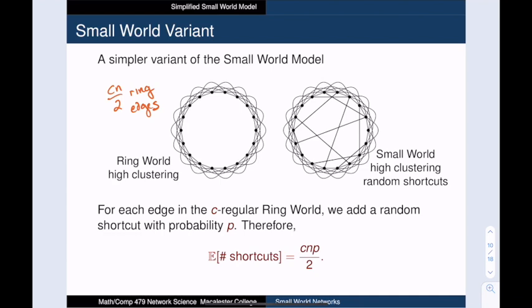Now rather than rewiring these existing edges, we will just add some completely random edges. In particular, for every edge in the graph, we flip a weighted coin to decide whether to add a random edge as well. So on average, we will add cn p over 2 random edges. We call these random edges shortcuts, since they zip across the middle of the ring world.